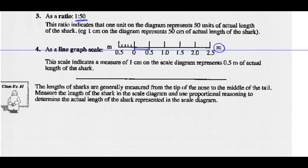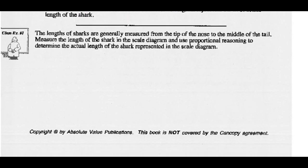Example 1. The lengths of sharks are generally measured from the tip of the nose to the middle of the tail. Measure the length of the shark in the scale diagram, and use proportional reasoning to determine the actual length of the shark represented in that scale diagram. Go ahead and measure the shark, then see if you can do proportional reasoning. Pause the video and come back to check.